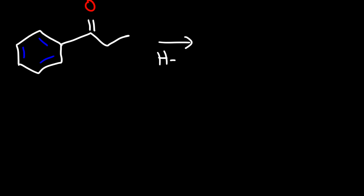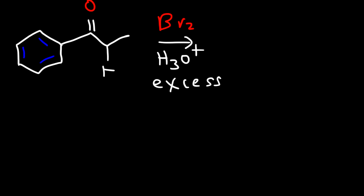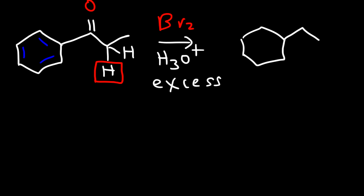Now let's work on some practice problems. What's going to happen if we react this ketone with Br2 under acidic conditions using excess Br2? First we need to identify the alpha hydrogen atoms. There are none on the left side of the ketone — that carbon already has four bonds. Under acidic conditions we can only replace one of the two alpha hydrogen atoms with a bromine atom. So the major product will look like this.